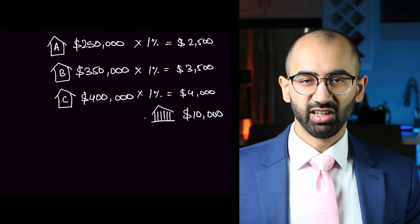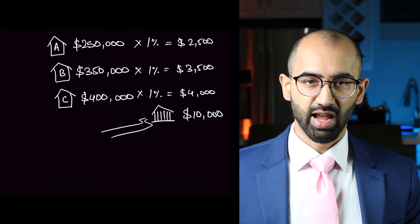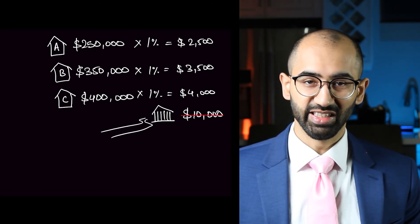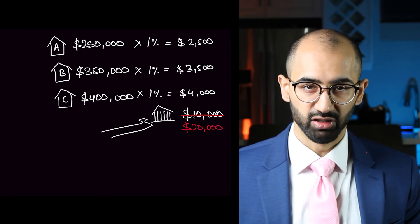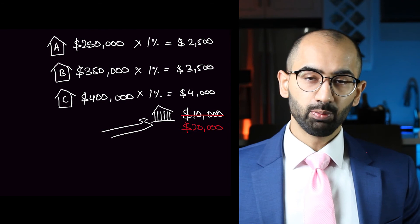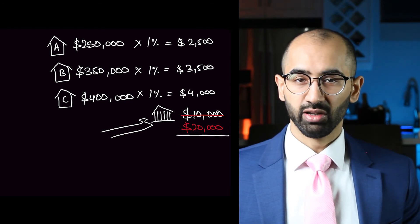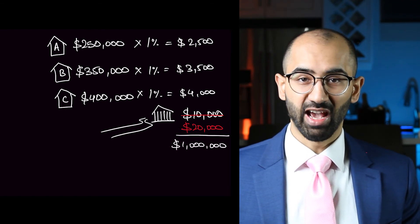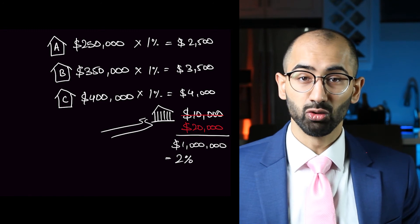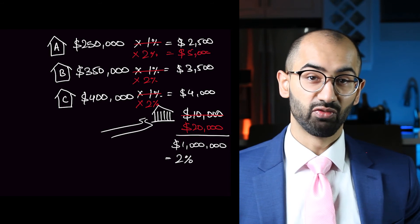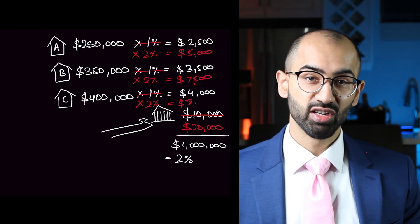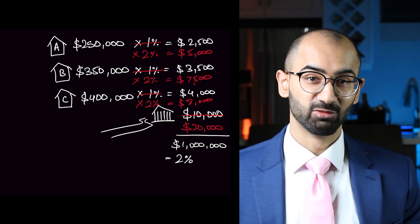Now let's say the city decides to build a brand new highway and the total amount of taxes they need to collect increased from $10,000 to $20,000. If we plug in this new tax amount into our formula, we're going to see that our tax rate has doubled from 1% to 2%, which means that the property taxes that these houses owe now is $5,000, $7,500, and $8,000. That highway better be worth it.